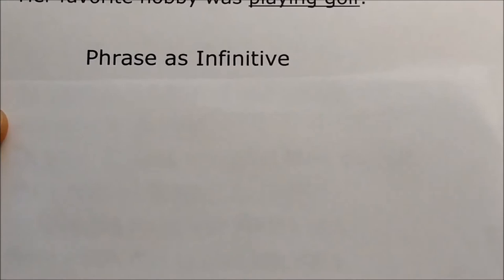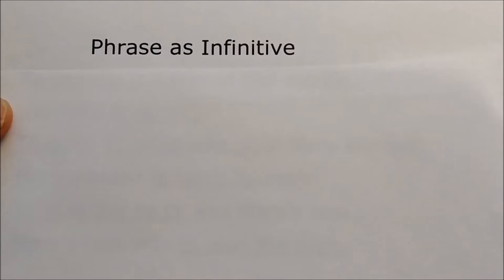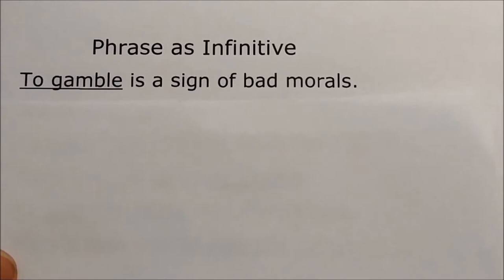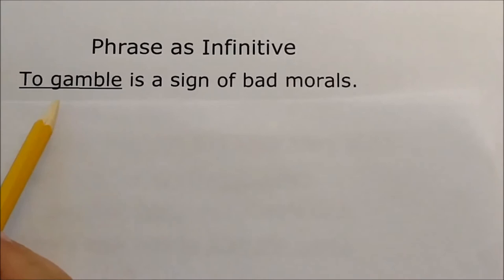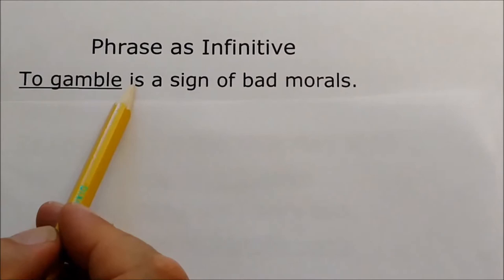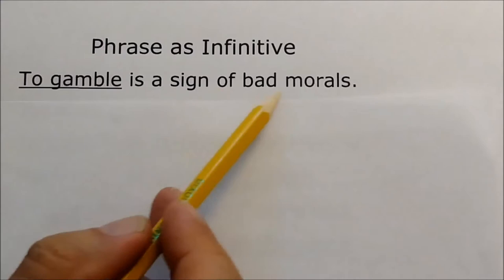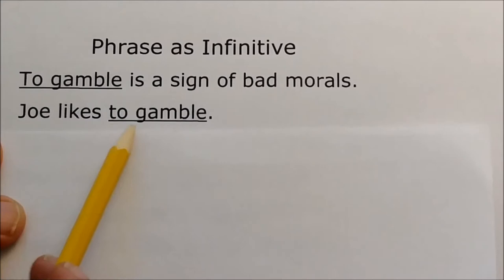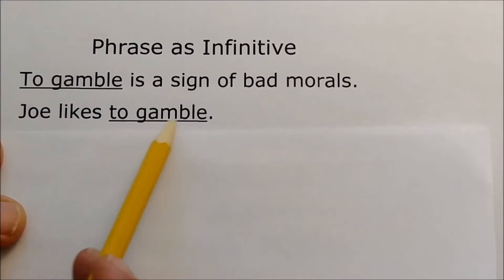We've talked about the infinitive in a previous module — Module 3. The infinitive is a form of the verb that has to in front of it: to go, to see, to read, to find, and so on. We can use the infinitive as a phrase. To gamble is a sign of bad morals — to gamble is the subject, it's a phrase, is is the verb, and a sign of bad morals is an adjective phrase describing to gamble. In Joe likes to gamble, instead of being the subject, to gamble becomes the direct object — Joe is the subject, likes is the verb, and to gamble is a phrase acting as the direct object.